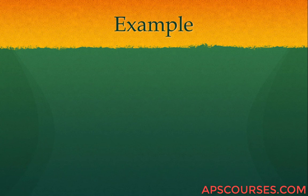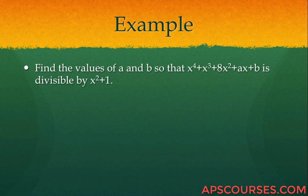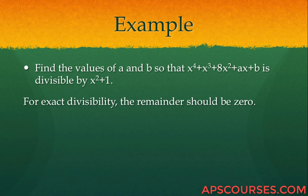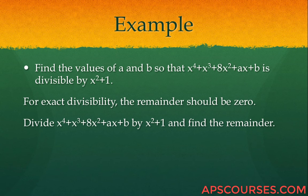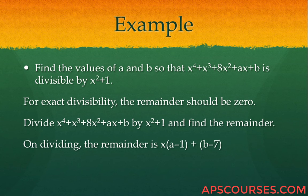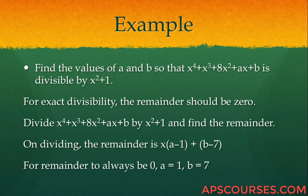Let us take an example: find the values of a and b such that x to the power 4 plus x cubed plus 8x squared plus ax plus b is divisible by x squared plus 1. For exact divisibility, the remainder should be 0. Divide the polynomial by x squared plus 1 and find the remainder, which comes out to be x times a minus 1 plus b minus 7. For the remainder to be always 0, the coefficient of x must be 0 and the constant term must be 0. Therefore a equals 1 and b equals 7.